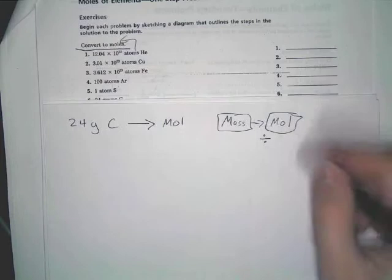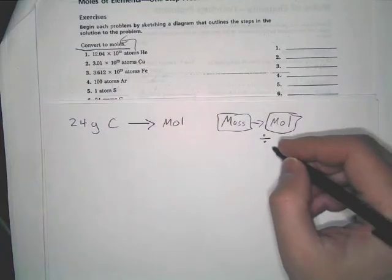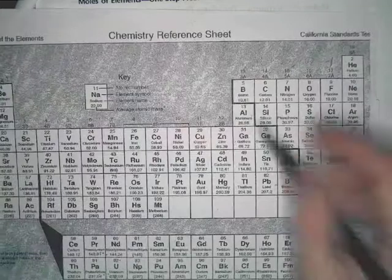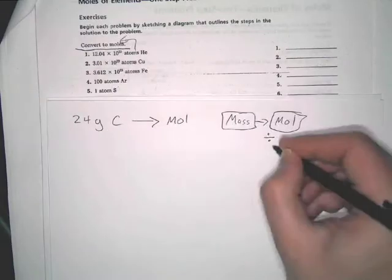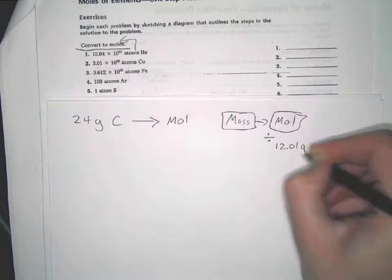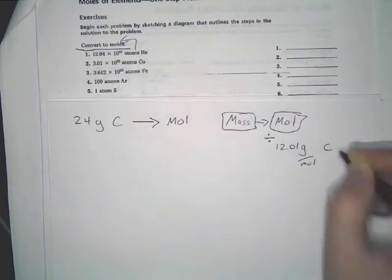So we have to find the mass of carbon on our periodic table. It is 12.01, so it's going to be divided by 12.01 grams per mole of carbon.